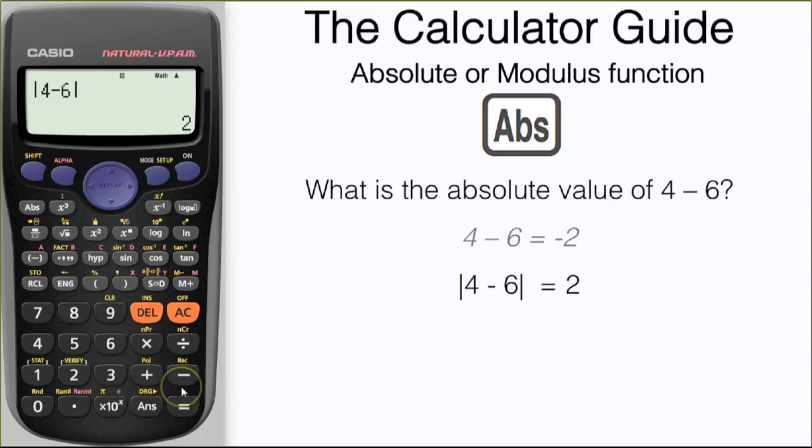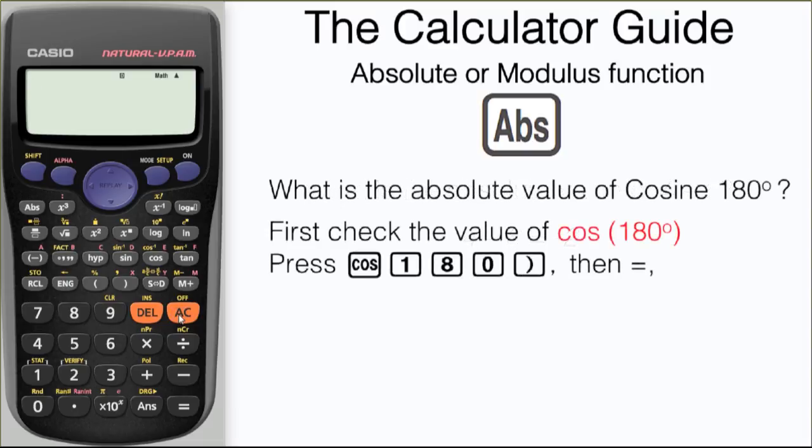This can be useful when we look at trigonometric functions. We're going to find the absolute value of cosine of 180 degrees, but first we'll check what the actual value of cosine 180 degrees is. And here we are, it's minus 1.